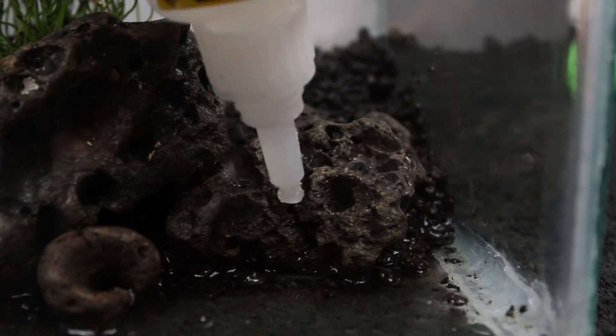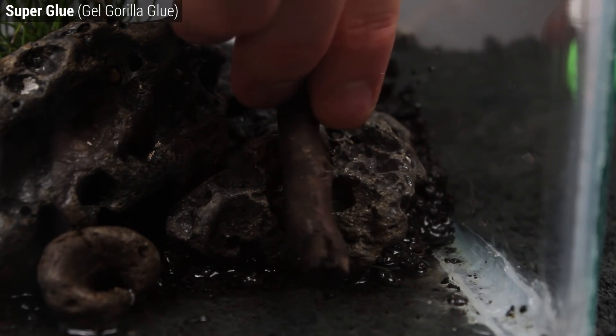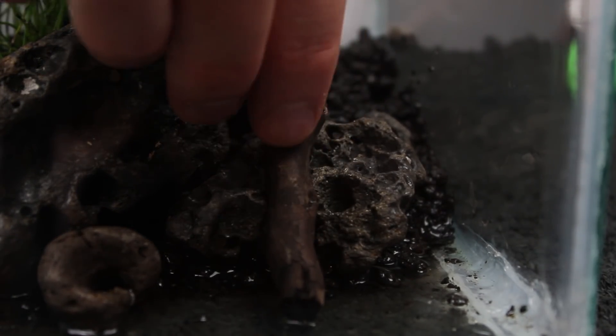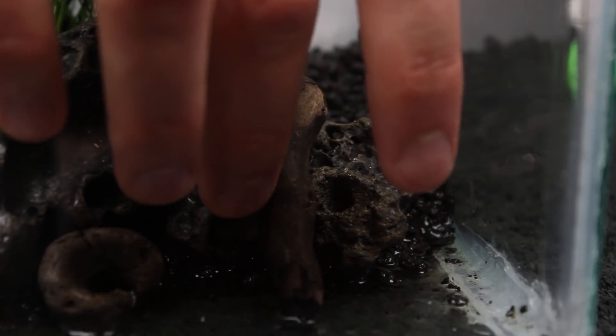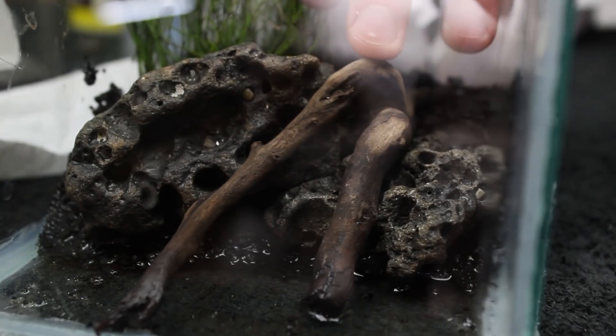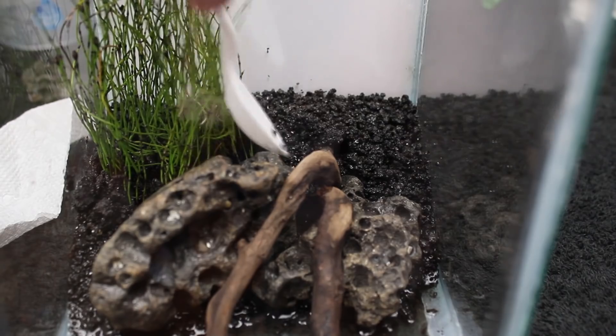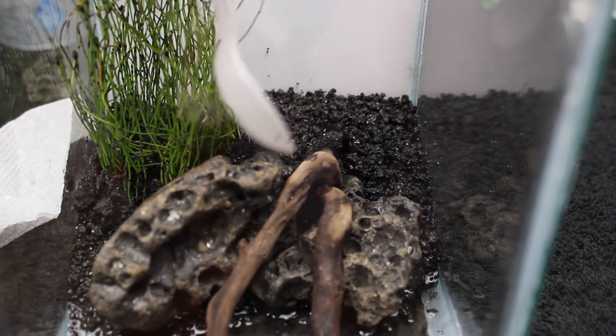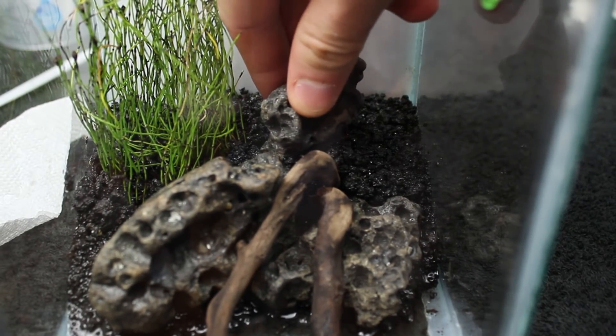At this point I knew that I could work with the hardscape, so I proceeded to super glue the spider wood into place. I knew they weren't going to sink as is, and I didn't feel like going through the trouble to boil two twigs, so glue was the best option at the time. From there I added a few spoonfuls of Eco Complete and worked it into the design.